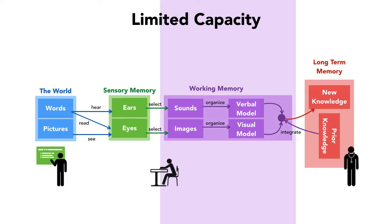Both channels feed into working memory, which has a limited capacity. This is what George Miller refers to in his 1956 article, 'The Magic Number 7 Plus or Minus 2,' in which he demonstrated that people can hold only about 7 pieces of information in short-term memory at one time. The truth is it's actually probably closer to 4. This limited capacity is why we cannot perform the multiplication of big numbers in our head — like 896 times 793 — because we simply don't have the capacity to hold all the interim products and do the calculations in our head.